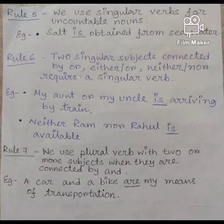Neither Ram nor Rahul is available. Rule 7: we use a plural verb with two or more subjects when they are connected by 'and'. Example: a car and a bike are my means of transportation. You can see that two subjects are connected by 'and' and that's why we have used a plural verb in this sentence.